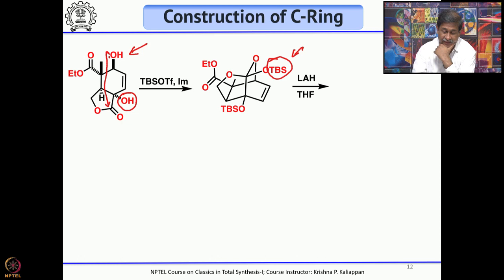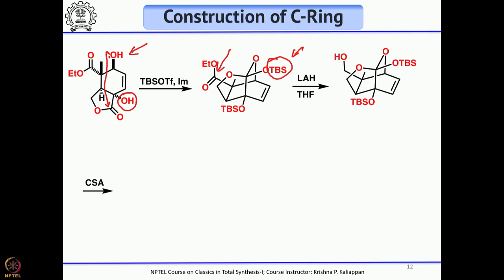This allows selective reduction of the ester to give the primary alcohol. Treatment with camphorsulfonic acid hydrolyzes the orthoester, selectively cleaving the ester group — which is what was originally planned.